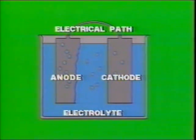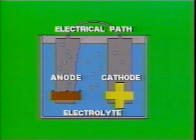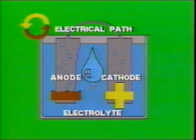Four conditions must always exist before corrosion can develop: there must be a metal that will corrode readily, called the anode; a different metal which has less tendency to corrode, called the cathode; an electrical path between the anode and the cathode, usually through metal-to-metal contact; and a conductive liquid called the electrolyte.